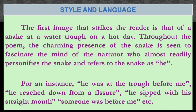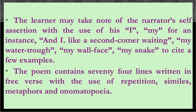Coming to the style and language of the poem: the first image that strikes the reader is that of a snake at a water trough on a hot day. Throughout the poem, the charming presence of the snake fascinates the narrator, who almost readily personifies the snake and refers to it as 'he.' For instance, the poet writes 'he was at the trough before me,' 'he reached down from a fissure,' 'he sipped with his straight mouth,' and 'someone was before me.' The learner may also take note of the narrator's self-assertion through the use of 'I' and 'my' — for instance, 'and I like a second comer waiting,' 'my water trough,' 'my wall face,' or even 'my snake.'